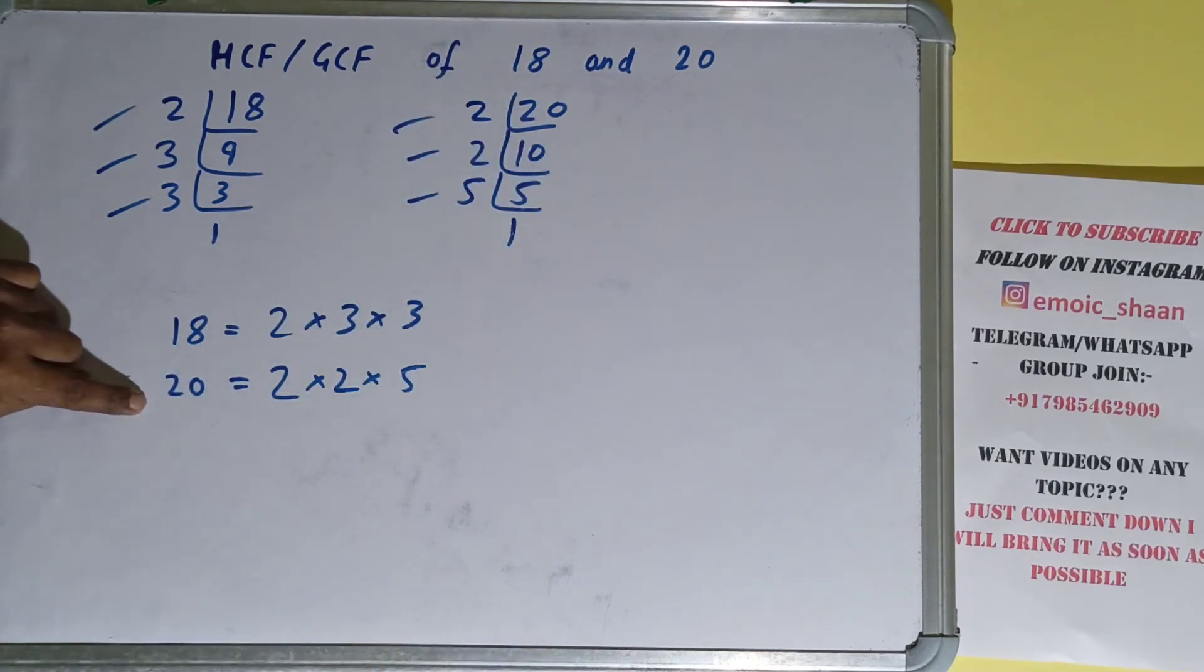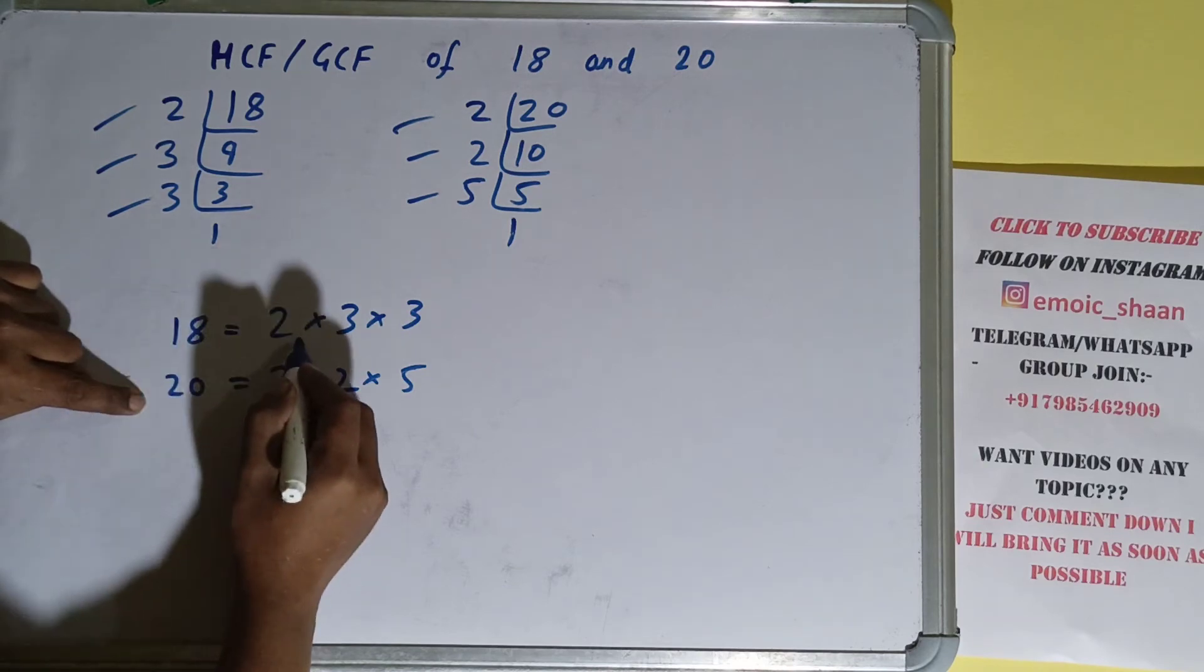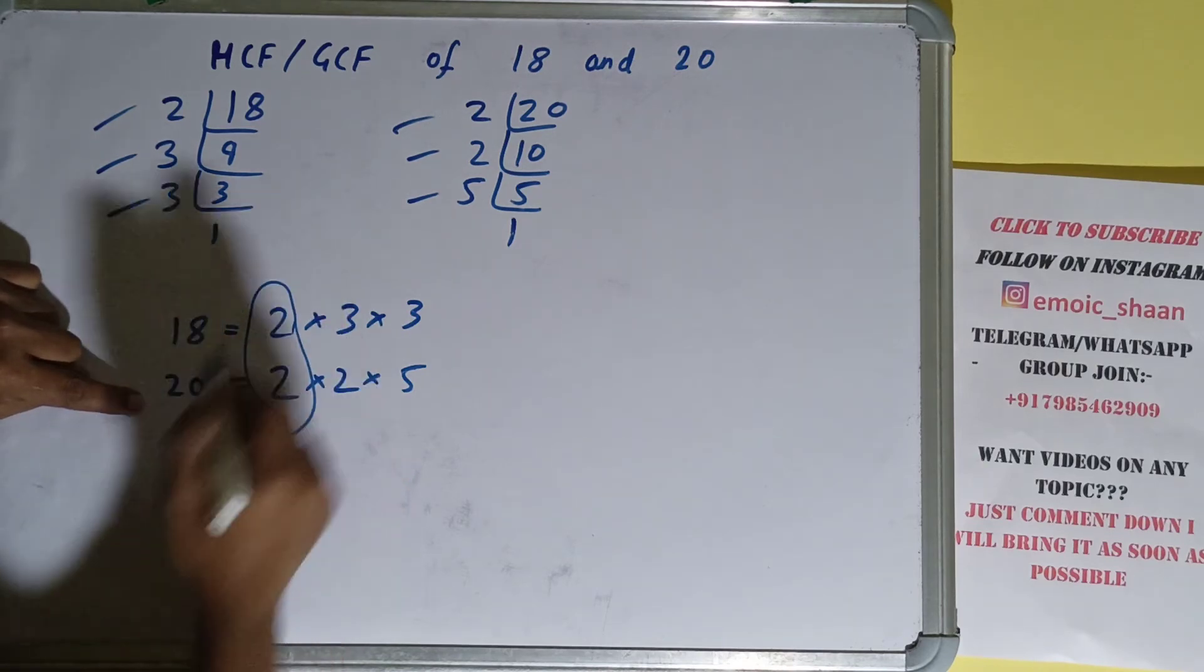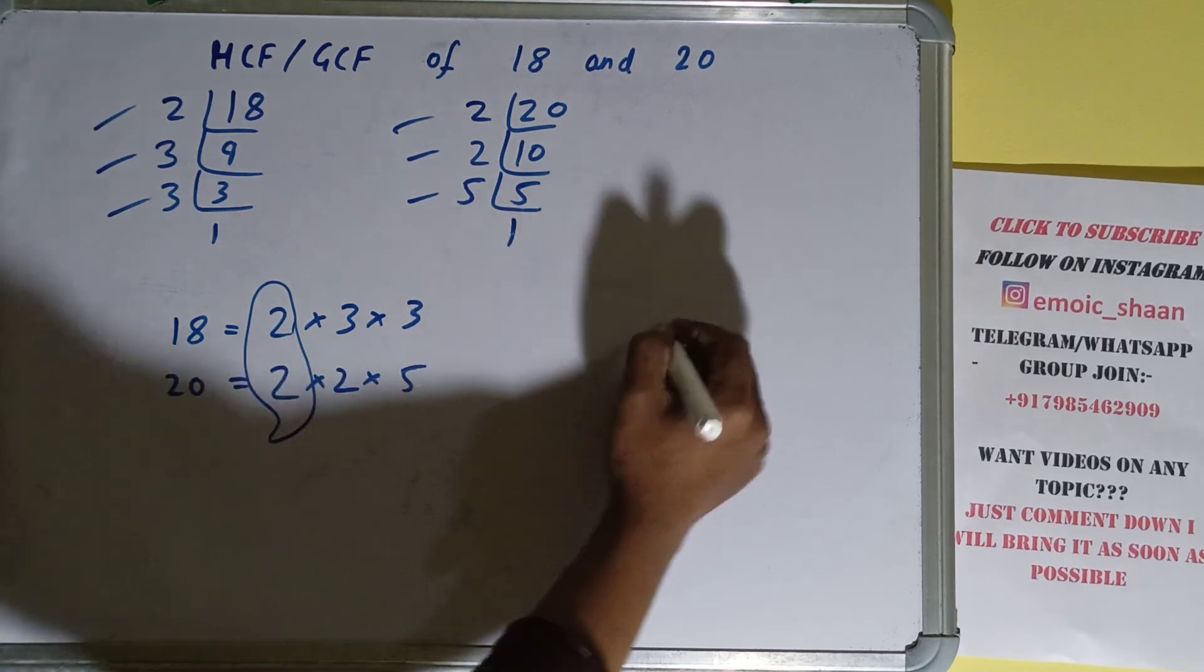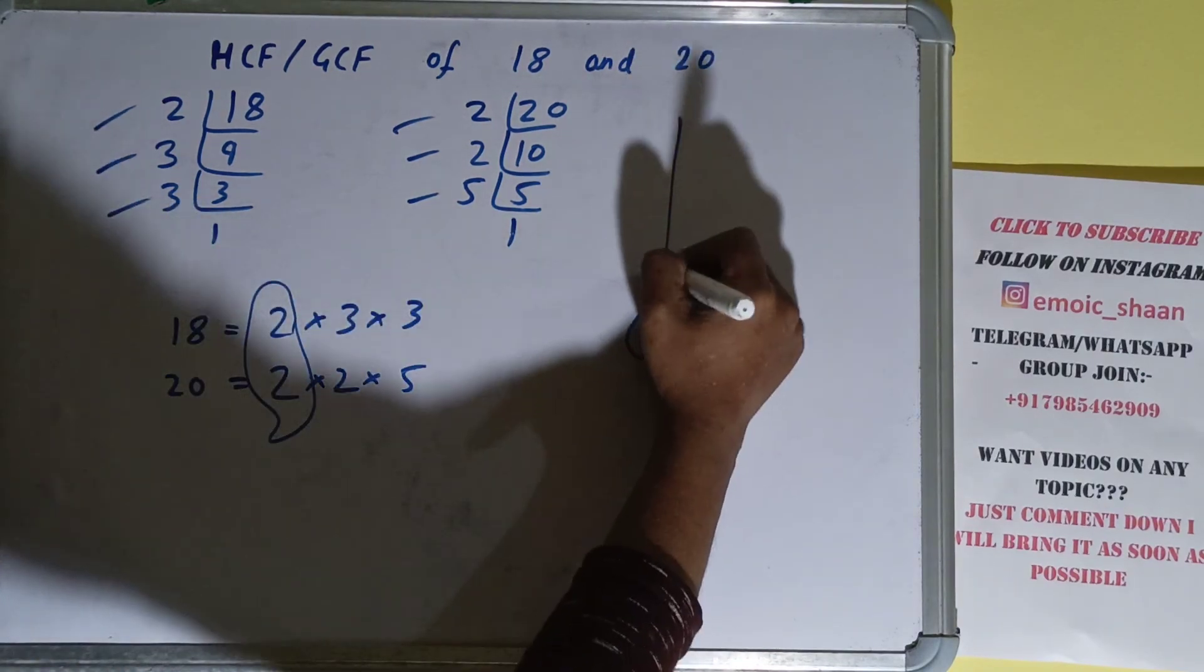The next thing you need to do is circle out the common prime factors. We only have one common prime factor, that is 2. So the answer will be 2. You can say that the HCF or GCF of the numbers 18 and 20 is 2.